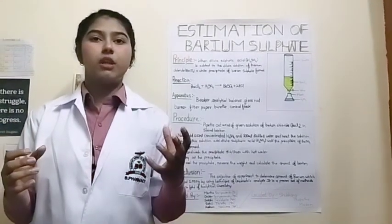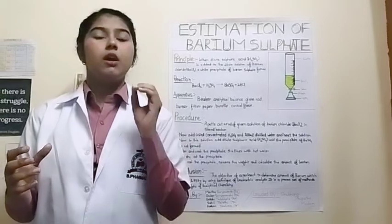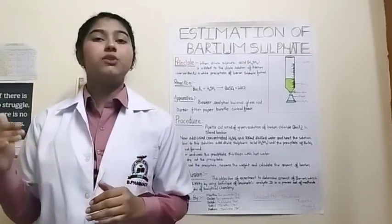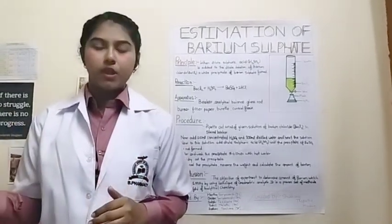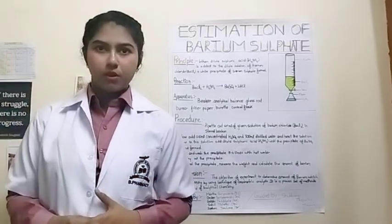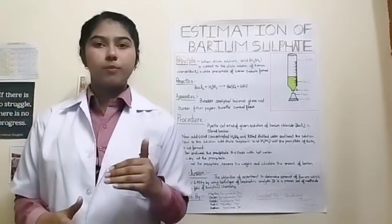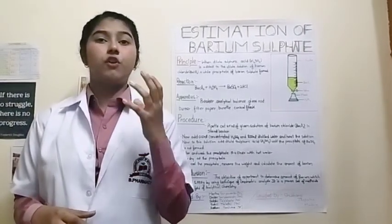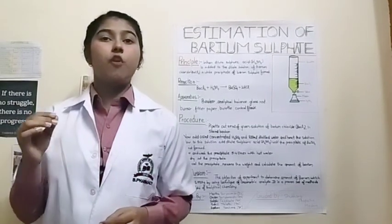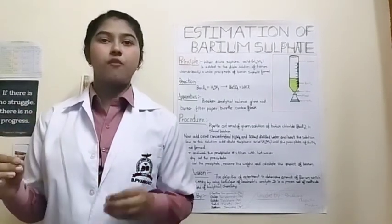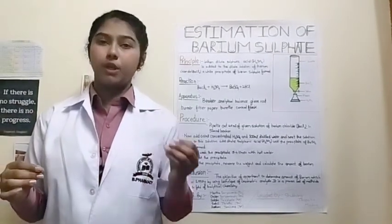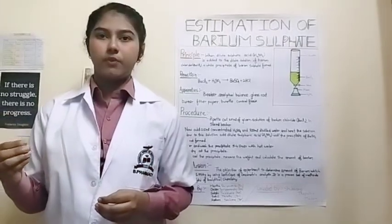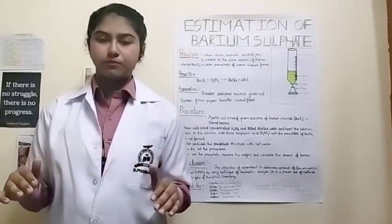Then take and wash the crucible with 2 ml of acetic acid and then add to the suspension. After the addition of the suspension, wash the crucible residue with successive quantities of a 2% w/v solution of sodium bicarbonate until the washing is free from sulphate. Then discard the washing.